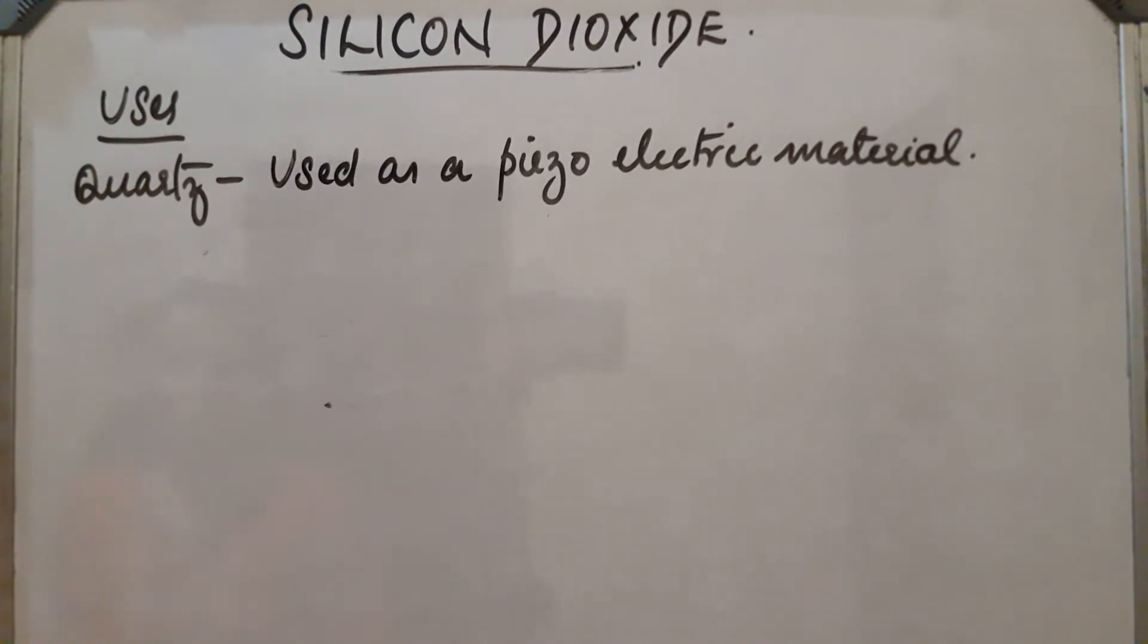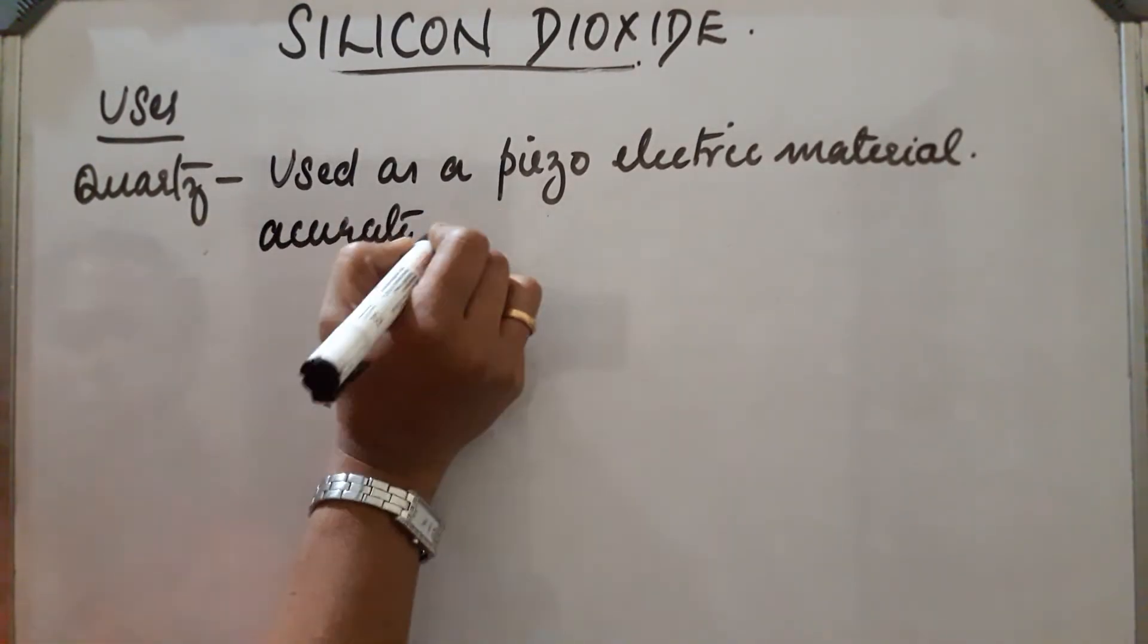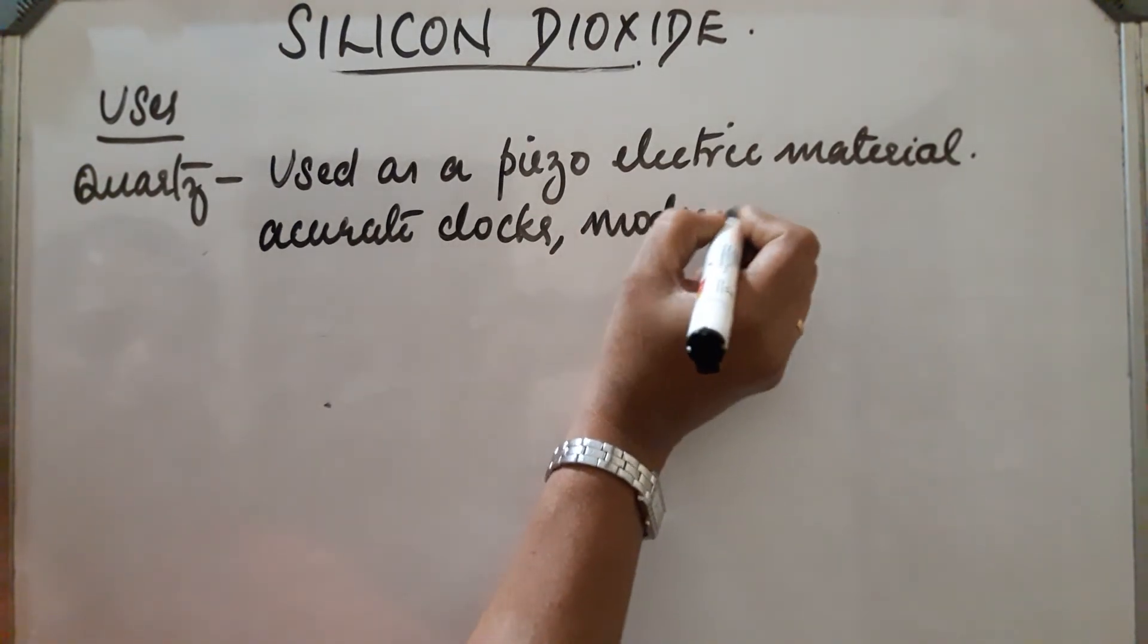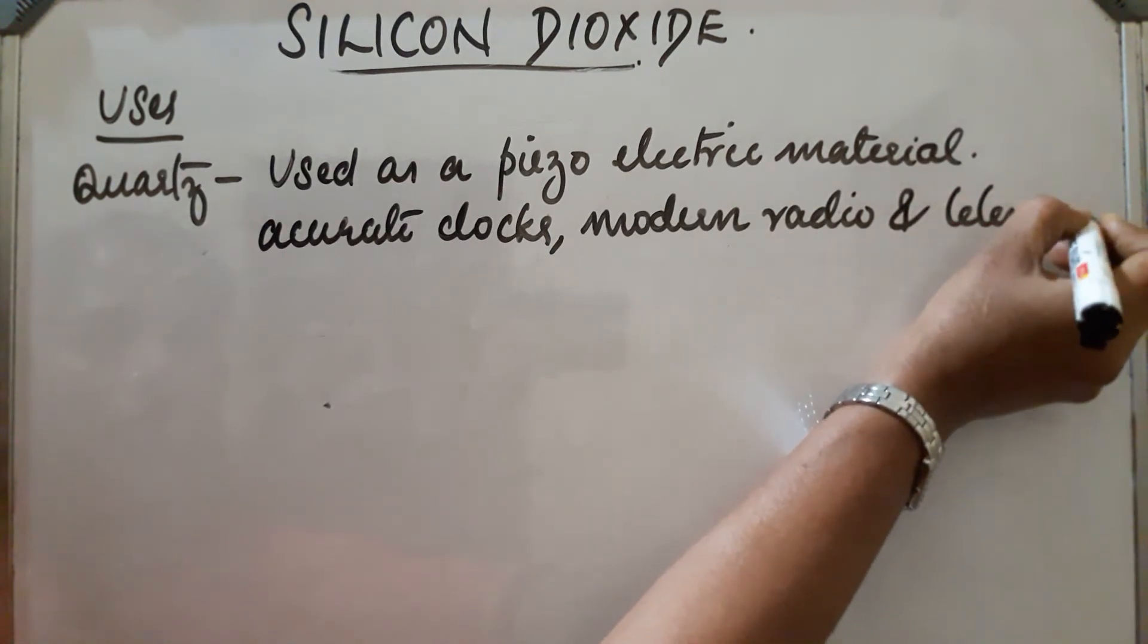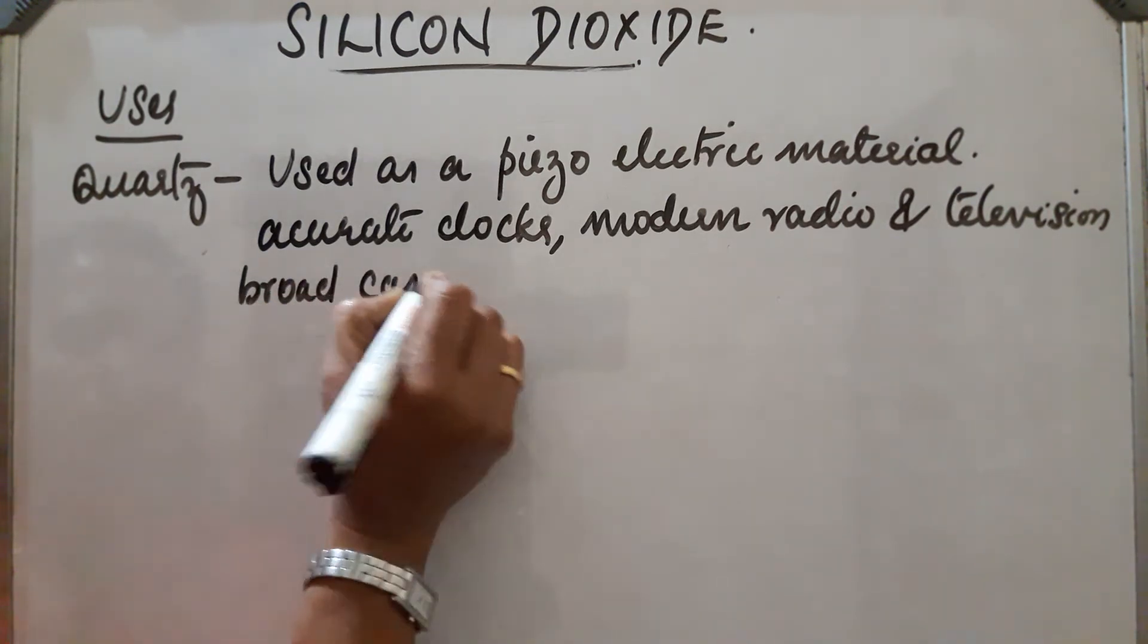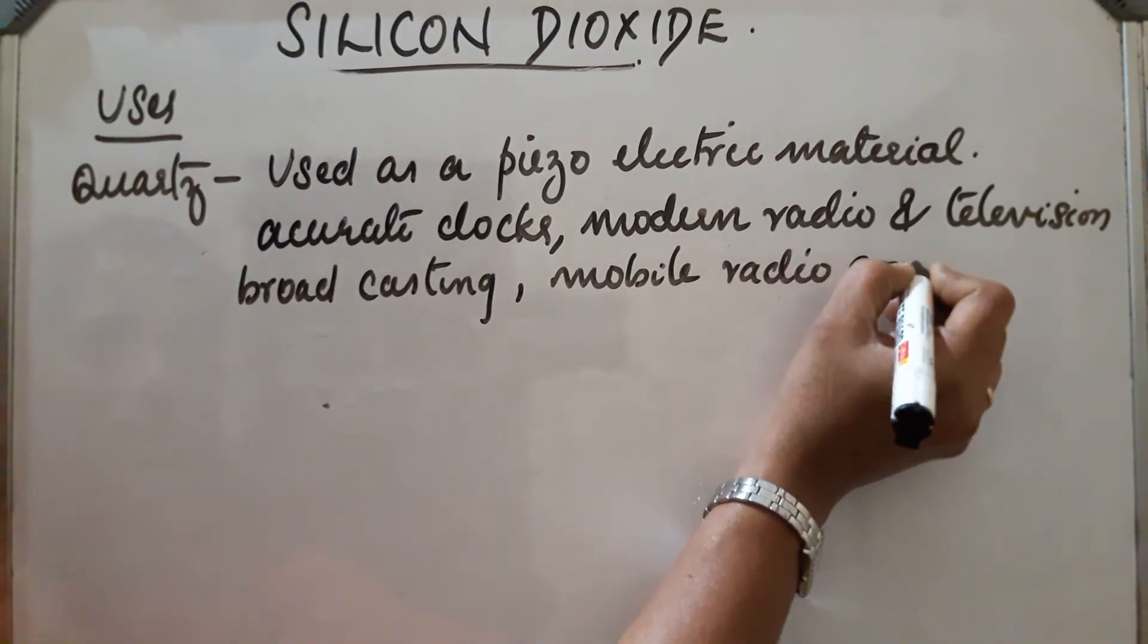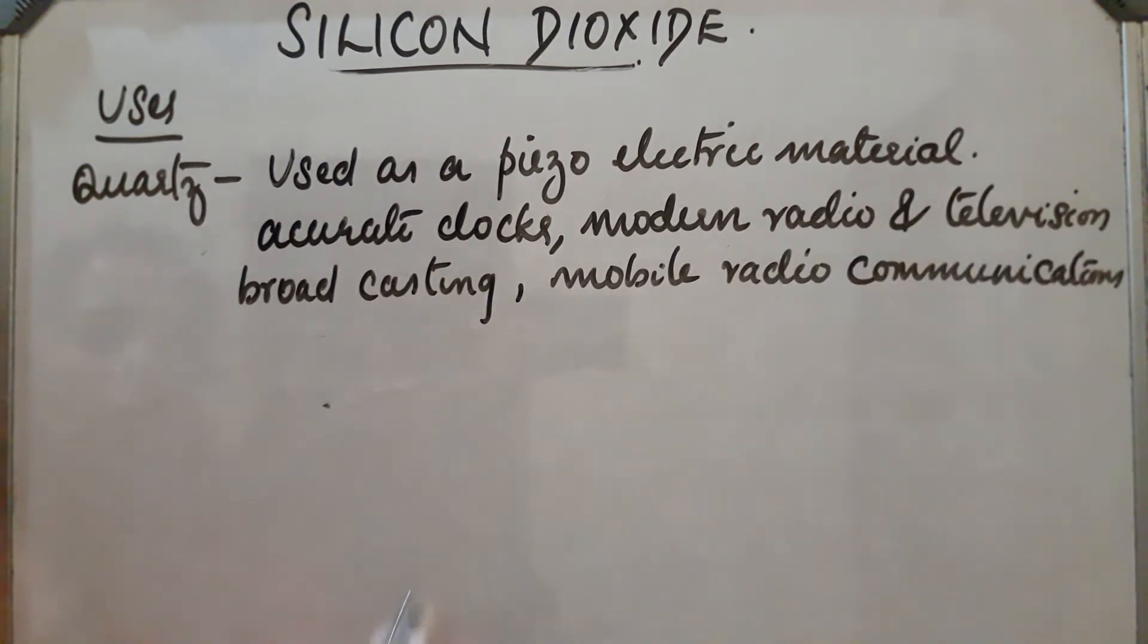So due to this property, it can be used for making accurate clocks, accurate clocks, then modern radio and television broadcasting, television broadcasting, then mobile radio communications, mobile radio communications.